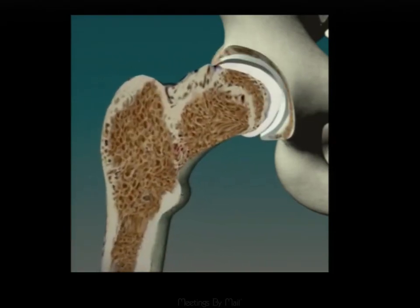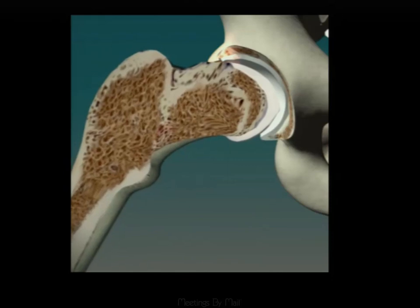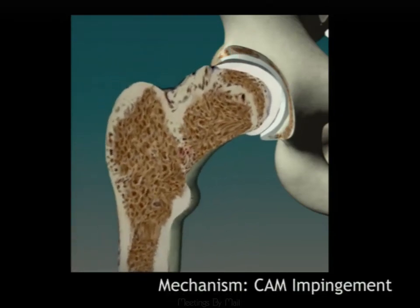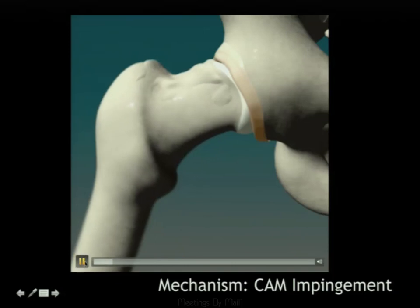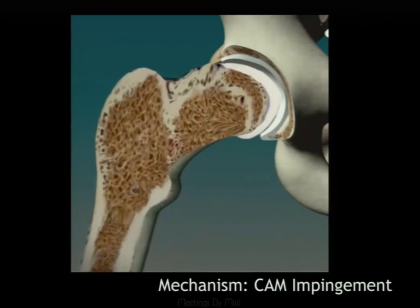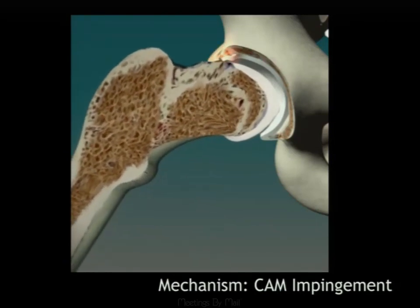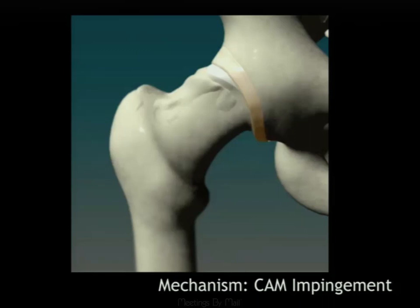This movie demonstrates the abnormality that occurs in a CAM-type deformity. As the hip is abducted, the CAM deformity pushes into the labrum. Additionally, the underlying cartilage is impacted. In the cutaway, you can see the labrum is lifted up with a chondrolabral separation, but there is also delamination of the superior articular cartilage of the acetabulum—a key finding to look for on MRI.